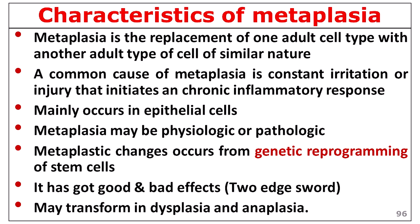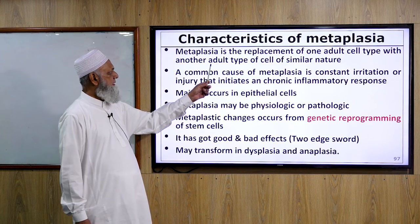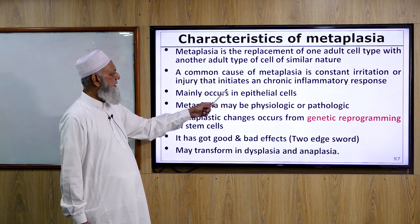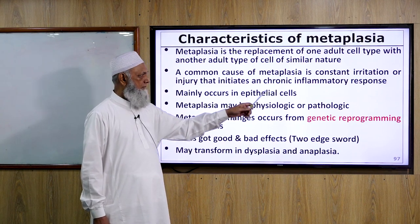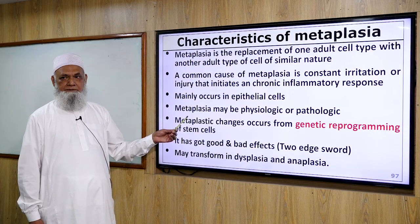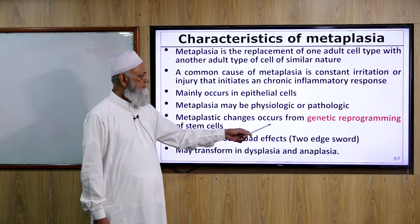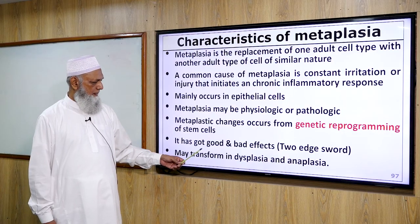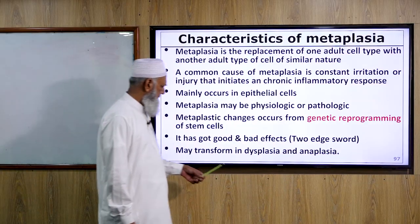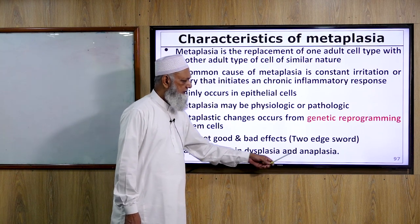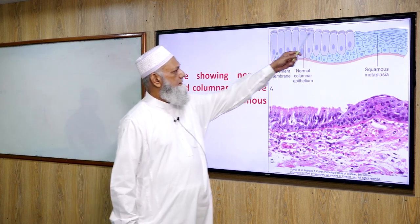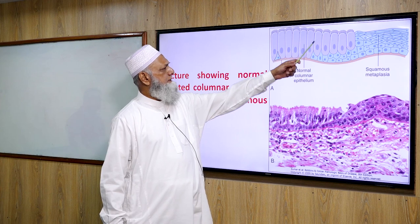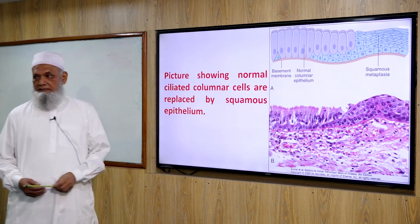Characteristics of Metaplasia: It is the replacement of one adult cell type with another adult cell type of similar nature. A common cause is constant irritation or injury that initiates a chronic inflammatory response. It mainly occurs in epithelial cells and may be physiological or pathological. Metaplastic changes occur from genetic reprogramming of stem cells. It has both good and bad effects — that is why it is called a double-edged sword. It may transform into dysplasia and anaplasia. This shows columnar epithelium replaced by squamous epithelium, called squamous metaplasia.